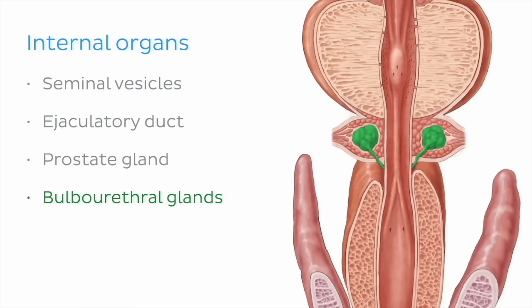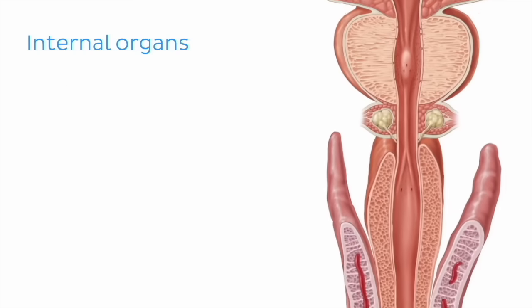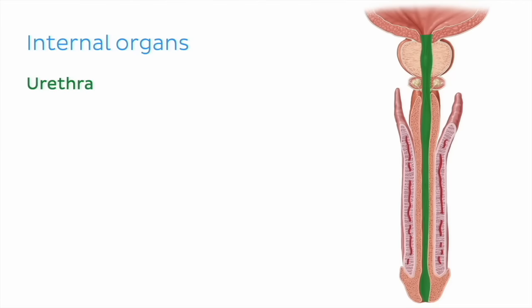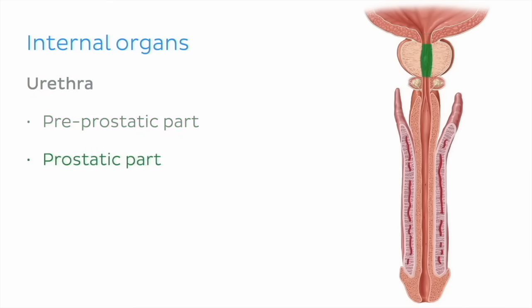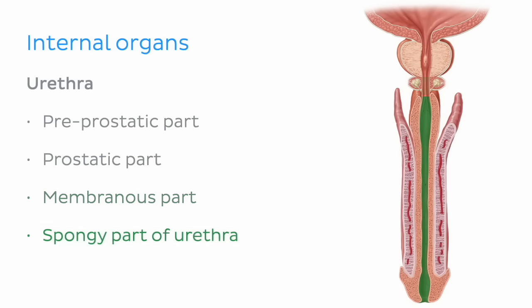Rounding up the internal organs, we looked at the urethra, which is a passageway through which semen and urine pass. We also mentioned its four parts: the pre-prostatic part, the prostatic part, the membranous part, and the spongy part.